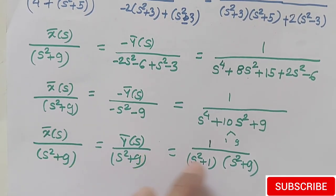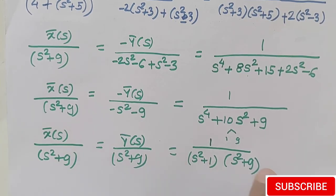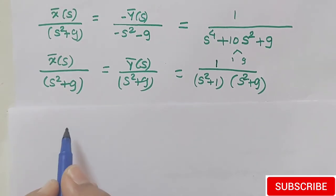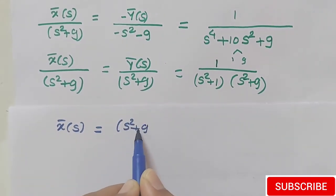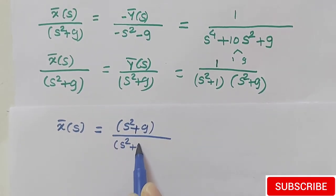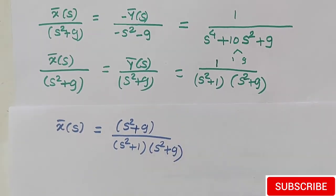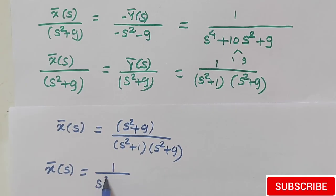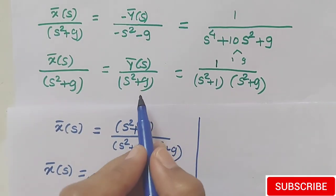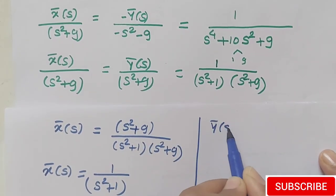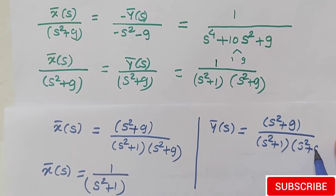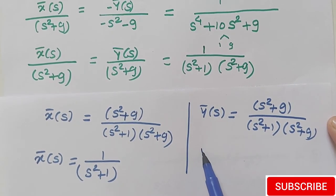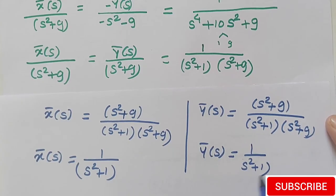We now equate the first and last quantities to find X̄(s). From the first and last ratio: X̄(s) equals (s² + 9) divided by (s² + 1)(s² + 9). The (s² + 9) terms cancel, giving X̄(s) = 1/(s² + 1). From the second and last ratio: Ȳ(s) equals (s² + 9) divided by (s² + 1)(s² + 9). Again (s² + 9) cancels, giving Ȳ(s) = 1/(s² + 1).